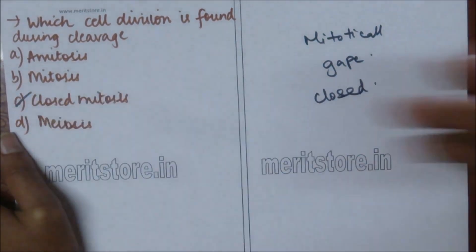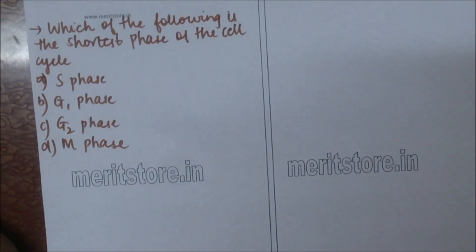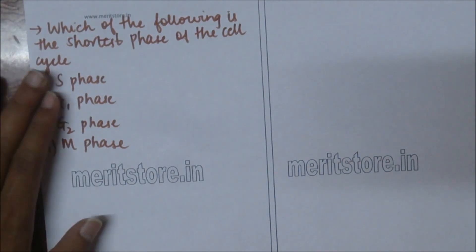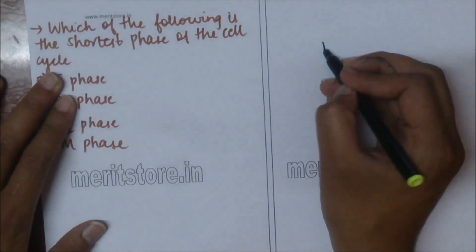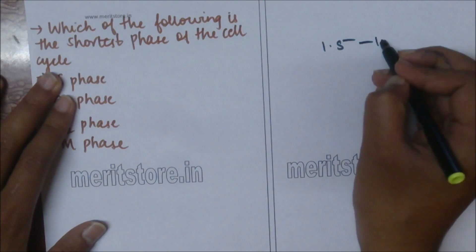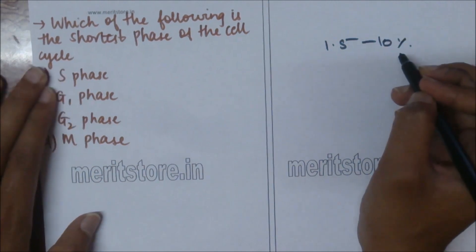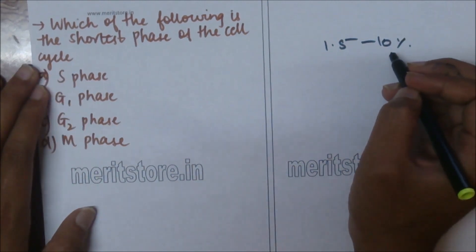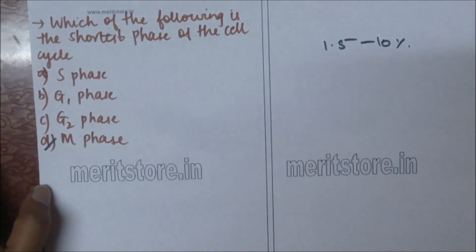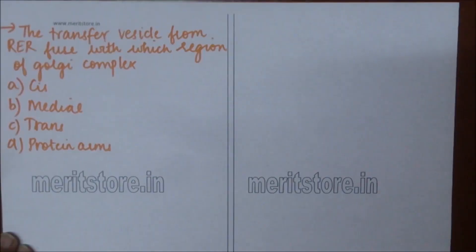Of the following, which is the shortest phase of the cell cycle? A) S phase, B) G1 phase, C) G2 phase, D) M phase. M phase takes only 1.5 to 10 percent of the total time of the cell cycle, making it the shortest phase. Option D is correct.